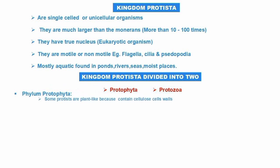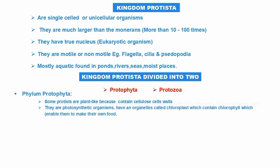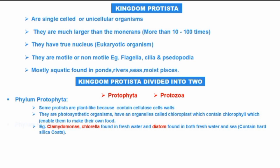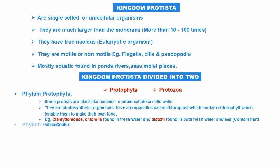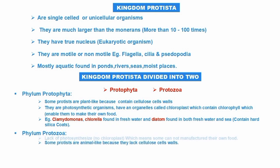Phylum Protophyta — some Protista are plant-like because they contain chloroplasts. They are photosynthetic organisms with chloroplasm, which enables them to make their own food. Examples are Chlamydomonas and Chlorella, found in fresh water, and diatoms, found in both fresh water and the sea, containing hard silica shells.